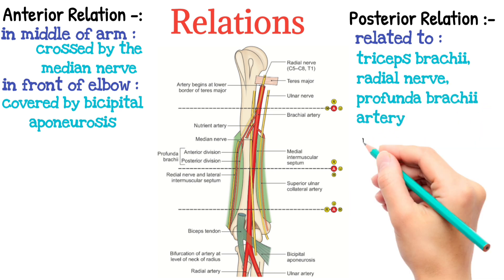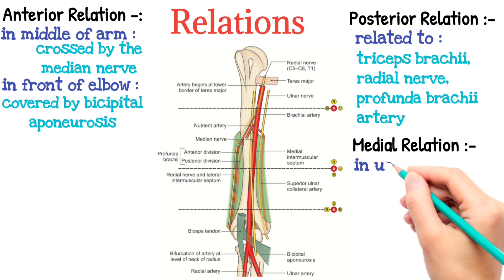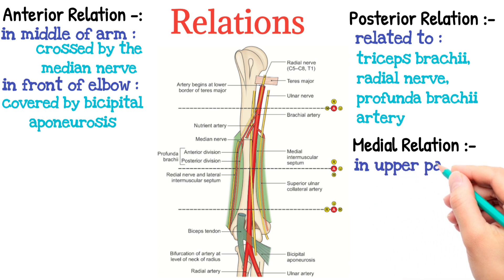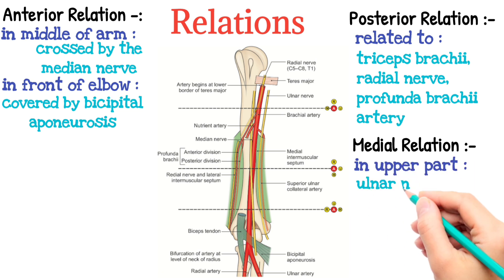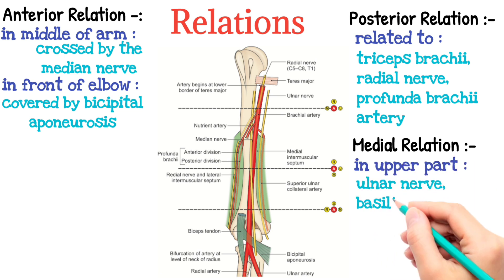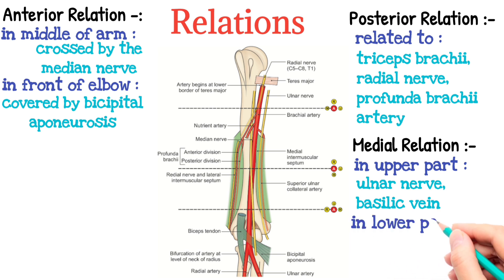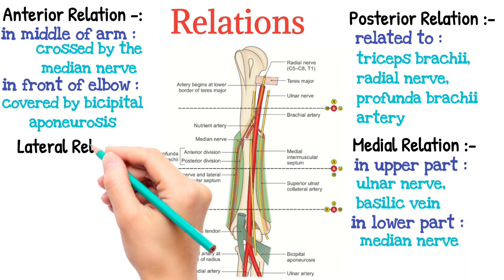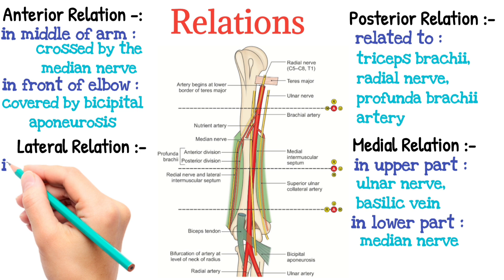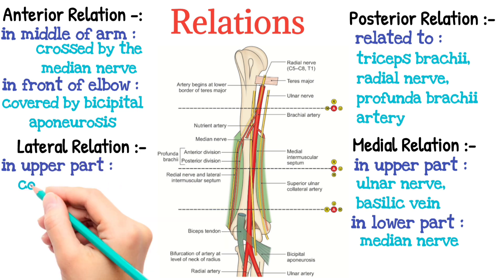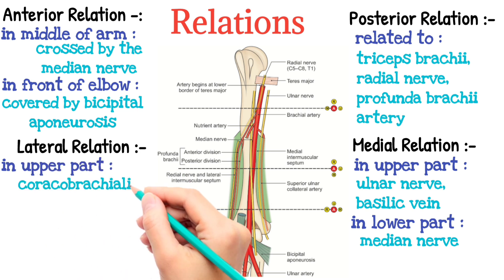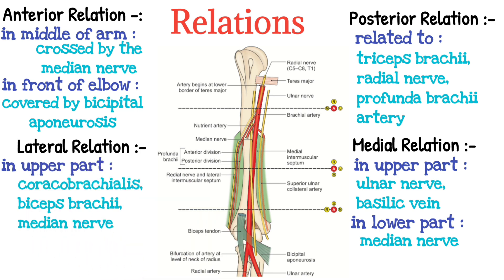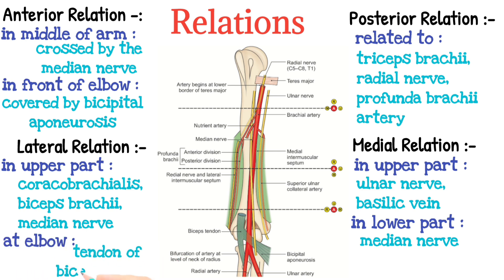Medially, in the upper part, it is related to the ulnar nerve and basilic vein, and in the lower part to the median nerve. Laterally, it is related to the coracobrachialis, biceps brachii, and median nerve in its upper part, and to the tendon of biceps brachii at the elbow.